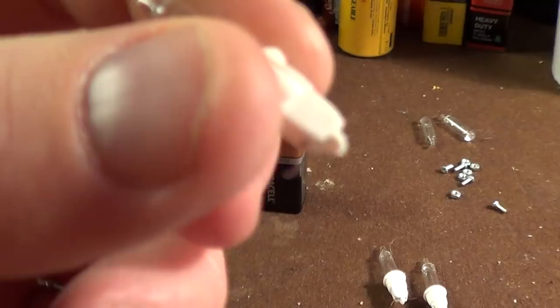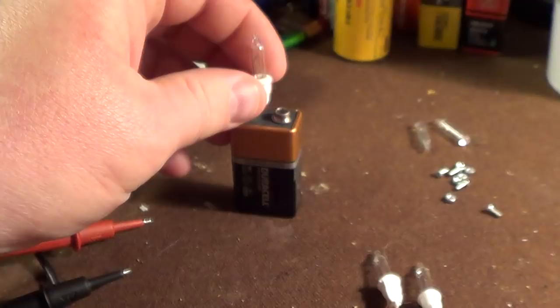I could simply unfurl the little wire legs at the bottom of each one of these bulbs, and if they were any good, I could place them across the 9-volt battery, and they would illuminate.